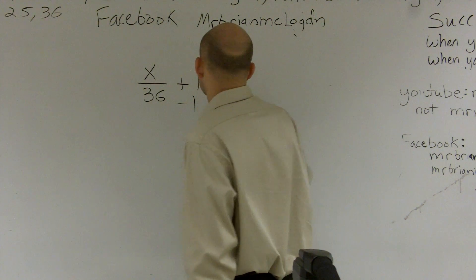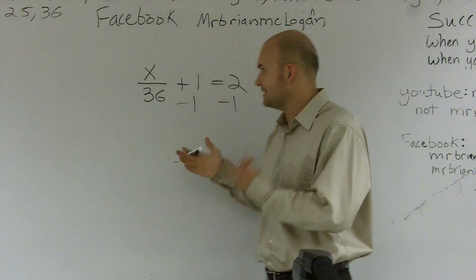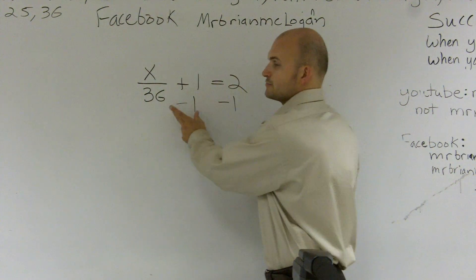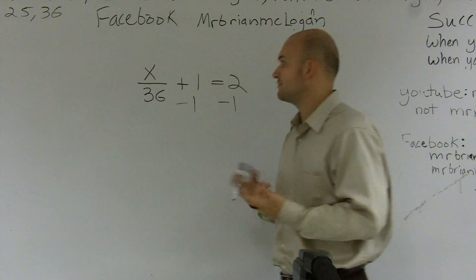So the opposite of addition is subtraction. And the main thing you need to remember when you first learn about this is you've always got to keep your equation equal. So if you're going to subtract a 1 on the left side, you have to make sure you subtract a 1 on the right side. And that's called our subtraction property of equality.